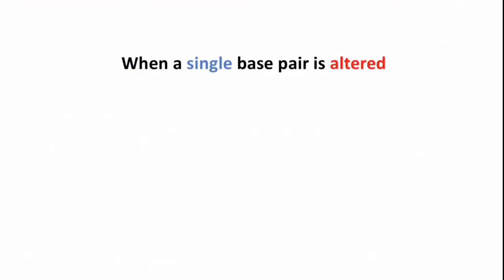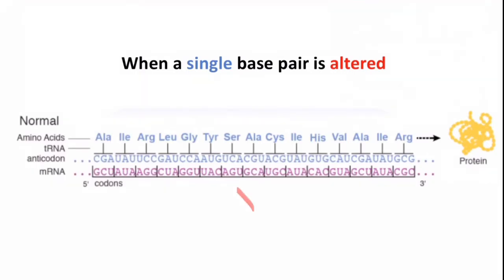Point mutation occurs when a single base pair is altered. That means in a point, a base pair is altered. In this picture, you can see the mRNA sequence. The transfer RNA is bringing specific amino acid according to the codons. And all these amino acids are making out the protein.